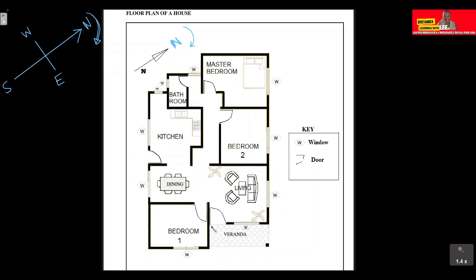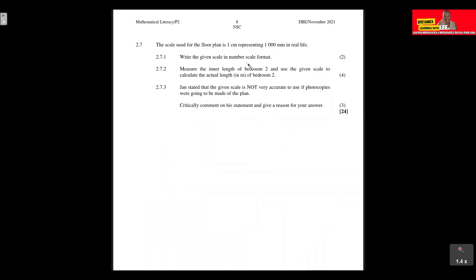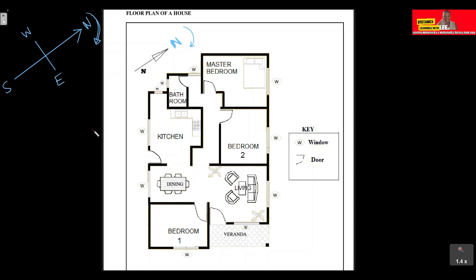We're also given a key that shows windows and doors. Now counting the bedrooms: we have the master bedroom — that's one — two — three. So from the floor plan, Jan's house has three bedrooms.